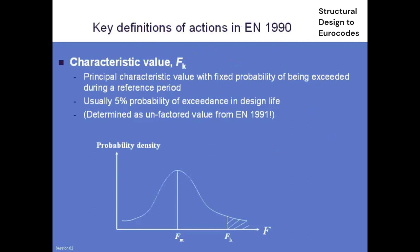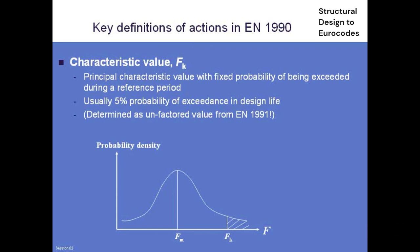The first very important definition is something called a characteristic value. K is used as a subscript for characteristic — not C, because C is used for concrete. A characteristic value of an action is defined as a principal value with a fixed probability of being exceeded during a reference period — typically a 5% fractile value over a reference period equal to the design life. In practice, it's basically the action you get when you go into Eurocode 1 and work it out; that's the default — the characteristic value.